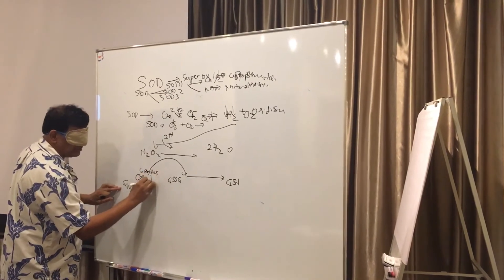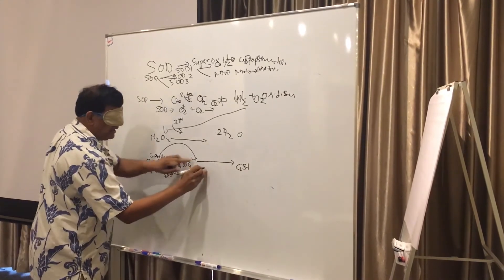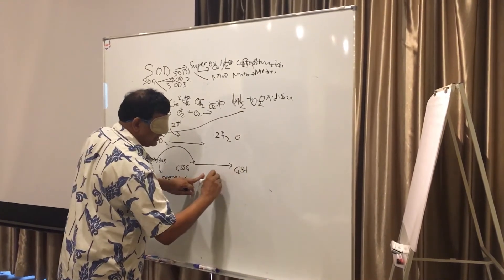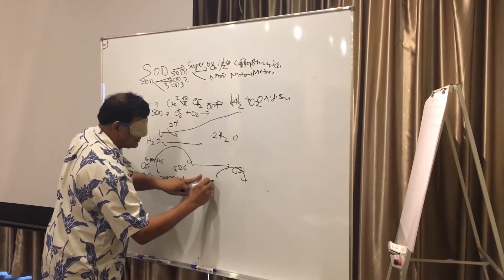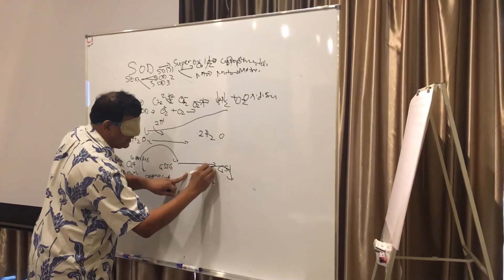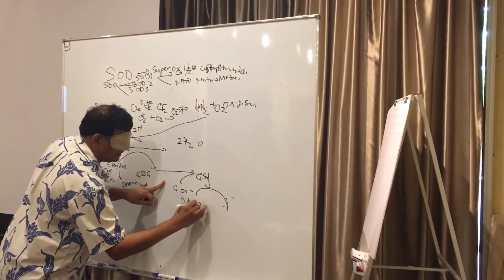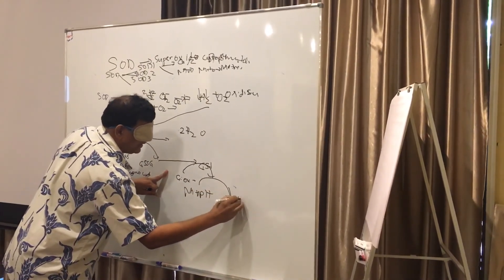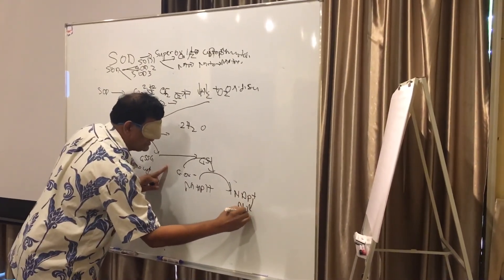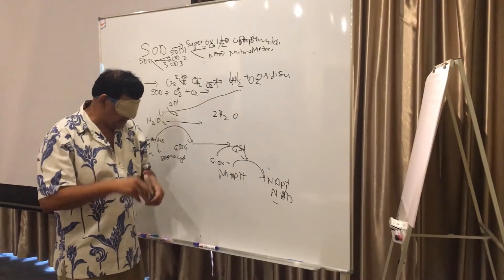Glutathione peroxidase requires selenocysteine. And GSSG again has to be reduced to GSH, and it requires glutathione oxidase. And it requires through the pathway of NADPH to NADP molecule. And that's where NAD is formed, nicotinic adenodiasin forms.